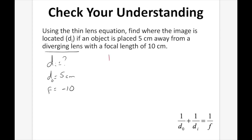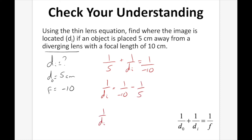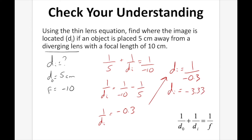Let's plug our numbers in: 1 over DO, which is 1 over 5, plus 1 over DI equals 1 over negative 10, because F was negative 10. Rearranging to isolate DI: 1 over DI equals 1 over negative 10 minus 1 over 5. Plugging that into the calculator gives 1 over DI equal to negative 0.3. To find DI, we take 1 divided by negative 0.3, which gives a DI value of negative 3.33 cm.